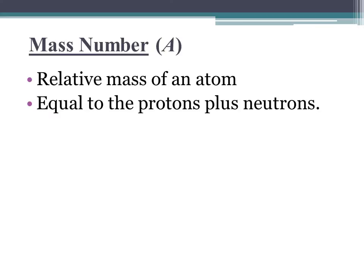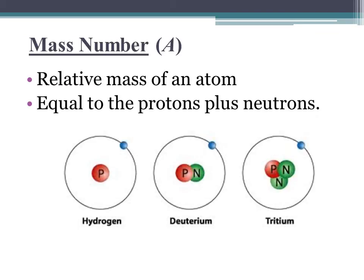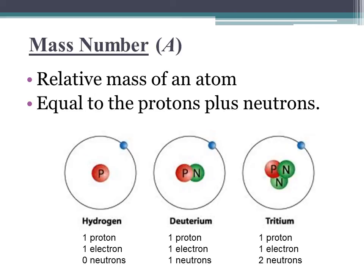Atoms of an element may differ from one another in mass and therefore in mass number. This can happen because although the number of protons in an atom of an element is fixed, the number of neutrons is not — it may vary and often does. Consider the element hydrogen: there are three different kinds of hydrogen atoms. They all have one proton in the nucleus. A light hydrogen atom, the most abundant type, has no neutrons. Another type, called deuterium, has one neutron. A third type, called tritium, has two neutrons. All atoms that contain the same number of protons but a different number of neutrons are called isotopes.